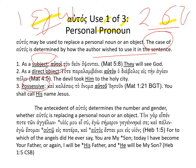αὐτός can function as a pronoun — as the subject, object, or possessive — just like the other two pronouns we looked at. Here's our verb ὄψονται, αὐτοί — third person nominative plural — 'they will see God.' The direct object αὐτόν, singular — 'the devil is our subject, παραλαμβάνει, the devil took him to the holy city' — him here as the direct object. And as well possessive — 'his name.'